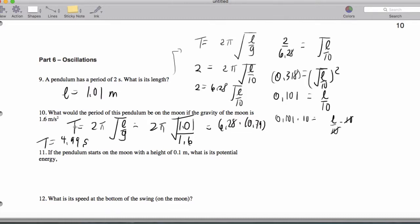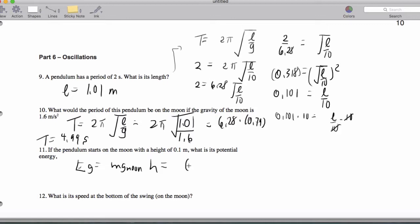Now if the pendulum starts on the moon with a height of 0.1 meters, what's its potential energy? So Eg equals mg of the moon times h, which is... did I give you a mass? Oh, boo-hoo.